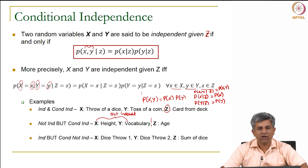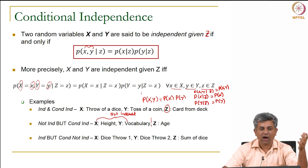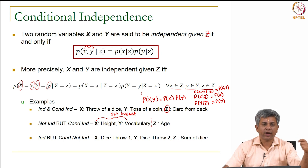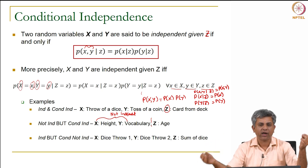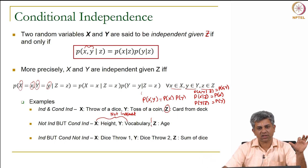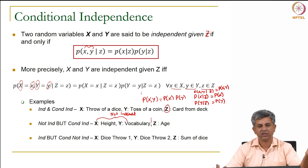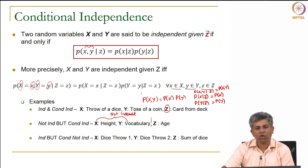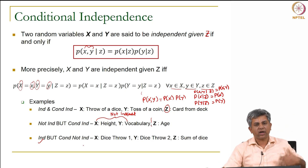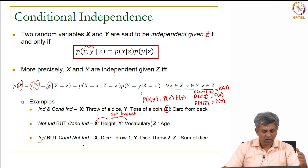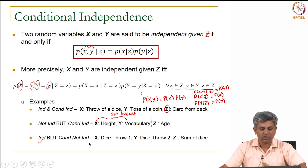Third example: two dice throws X and Y are originally independent — the value on one has no bearing on the other. But suppose we fix Z as the sum of the dice. Given x and z, the value of y is completely determined. Therefore X and Y are no longer conditionally independent given Z. This is a case where events are independent but after adding a condition they are no longer independent. So conditional independence is a separate idea from independence — you can have all sorts of combinations.